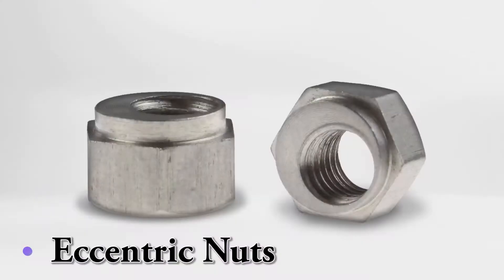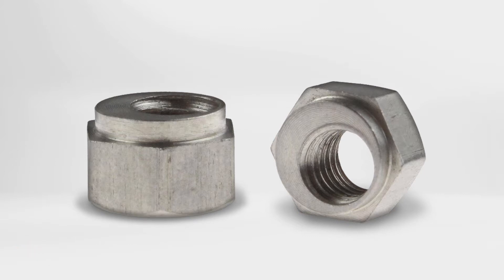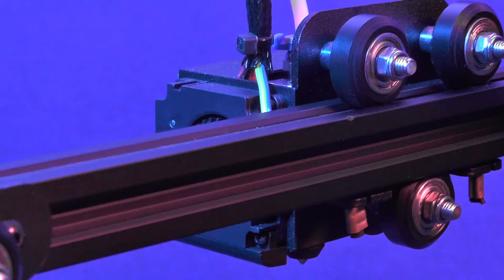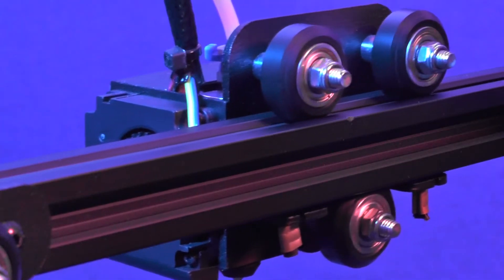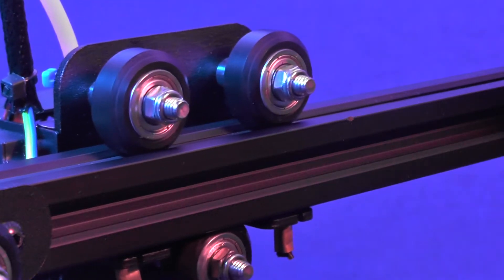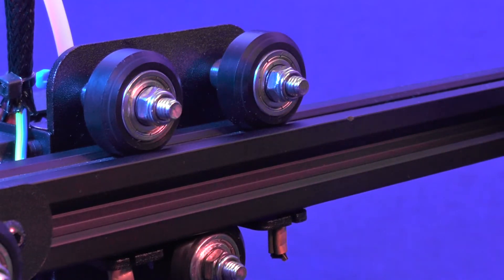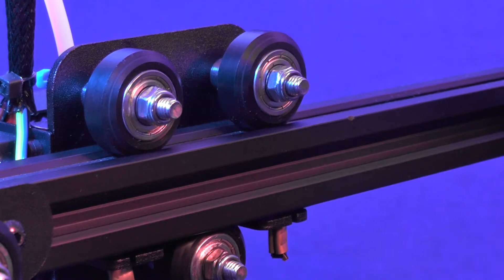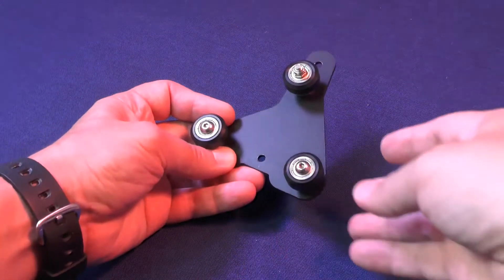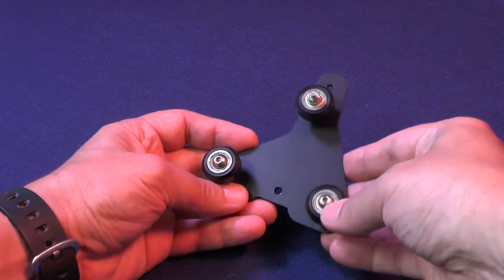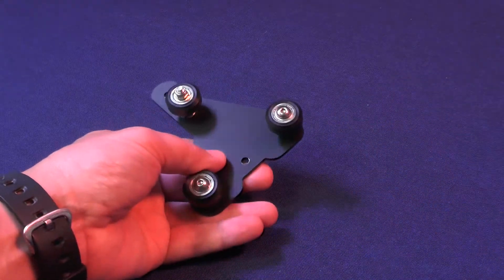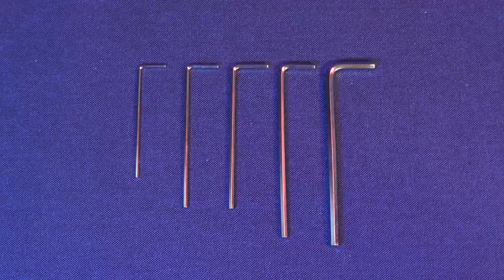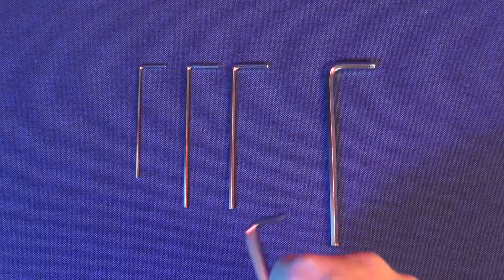Now comes the last step in our preliminary adjustments, which is tightening the eccentric nuts. These special types of nuts are used to adjust the distance between the wheels and the V-rails in which they roll. The eccentric nuts can be found in four locations on your printer. They come pre-adjusted from factory, but it's always good practice to check them before assembling a new printer. For this, we'll need to pick up the second largest hex wrench that came with the printer.